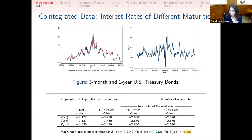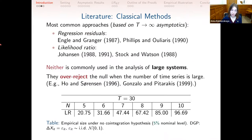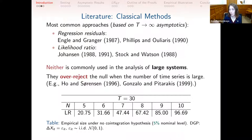We will focus on multiple non-stationary time series and check whether they have a stationary linear combination—in this case just the difference—which is whether they are cointegrated or not. There are two most traditional approaches, both based on large-T asymptotics where T (number of time periods) goes to infinity and n (number of time series) is fixed—as in our example where n was two.